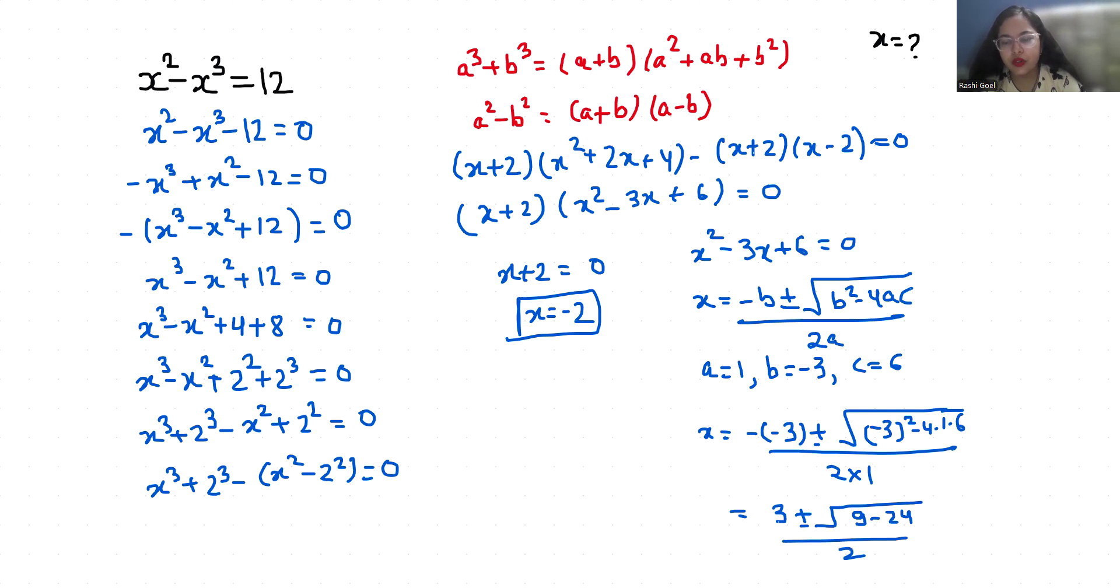x is equals to 3 plus minus square root minus 15 by 2. So x is equals to 3 plus minus root 15 iota by 2.